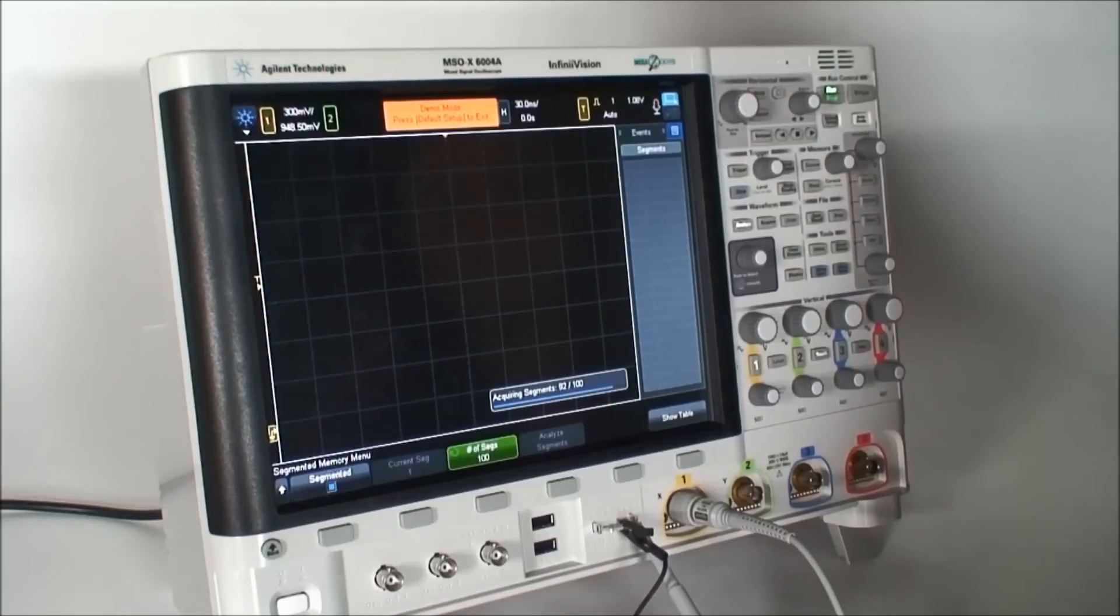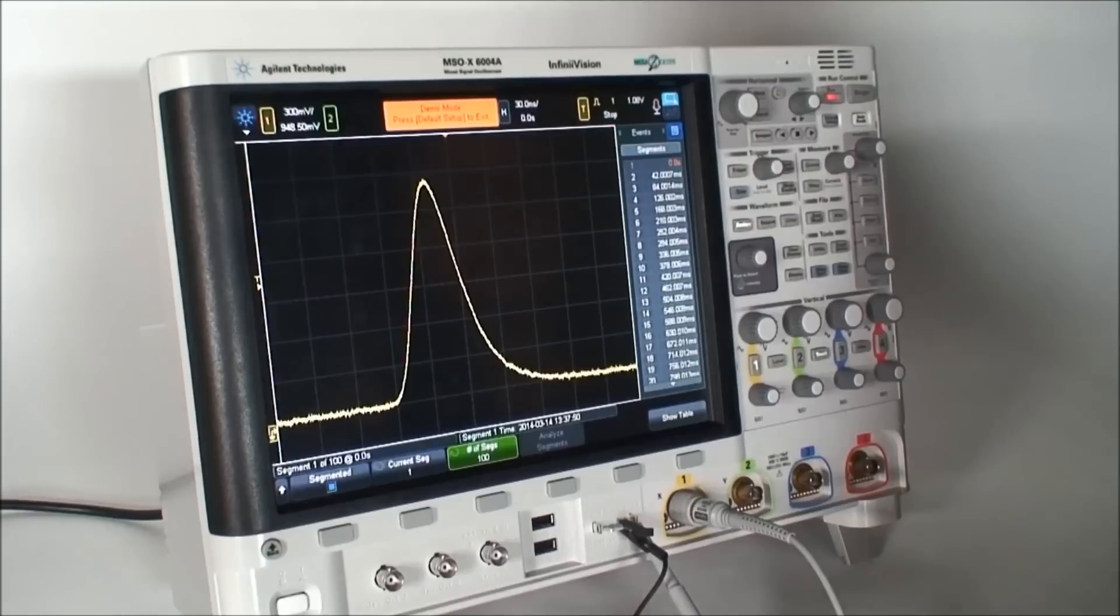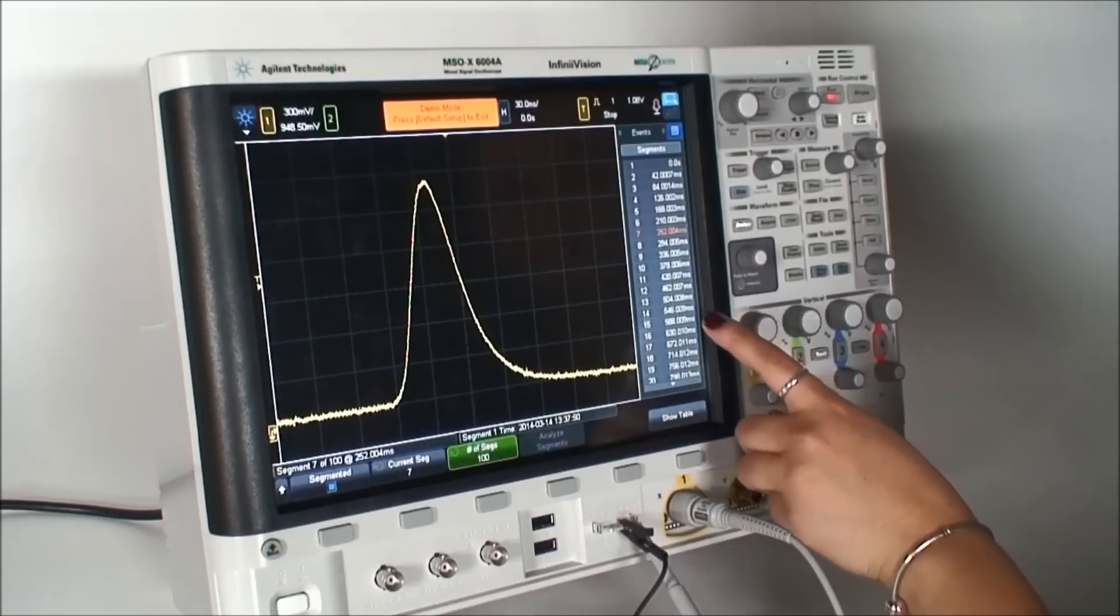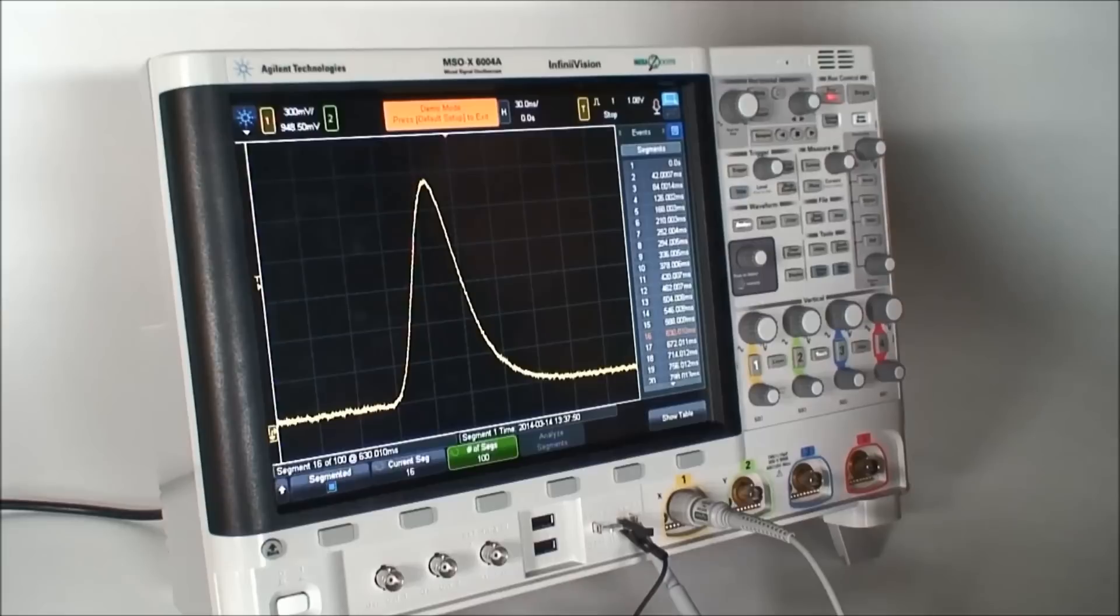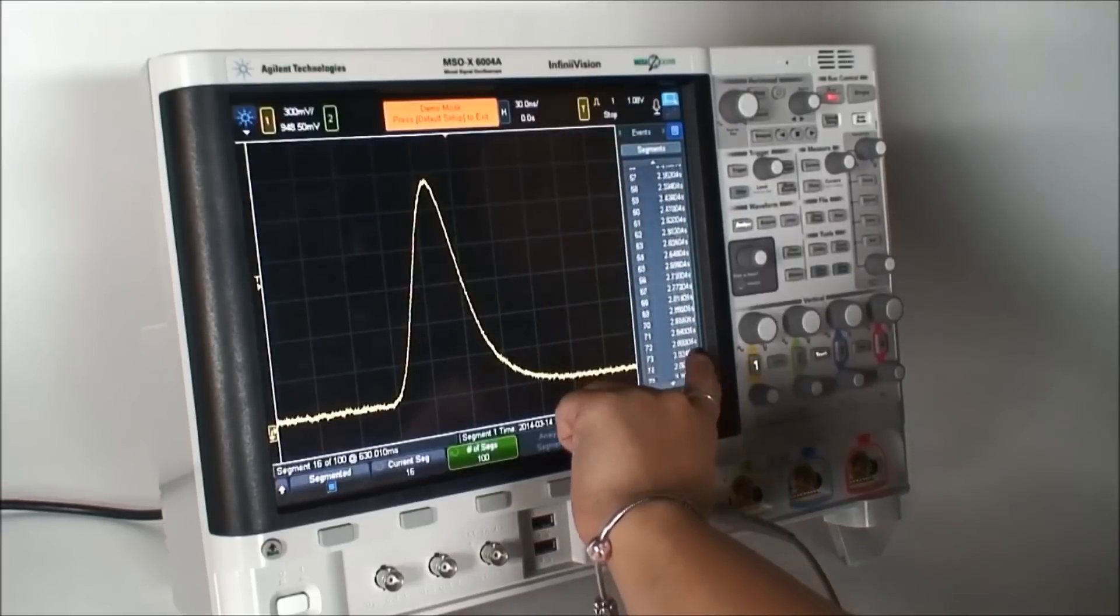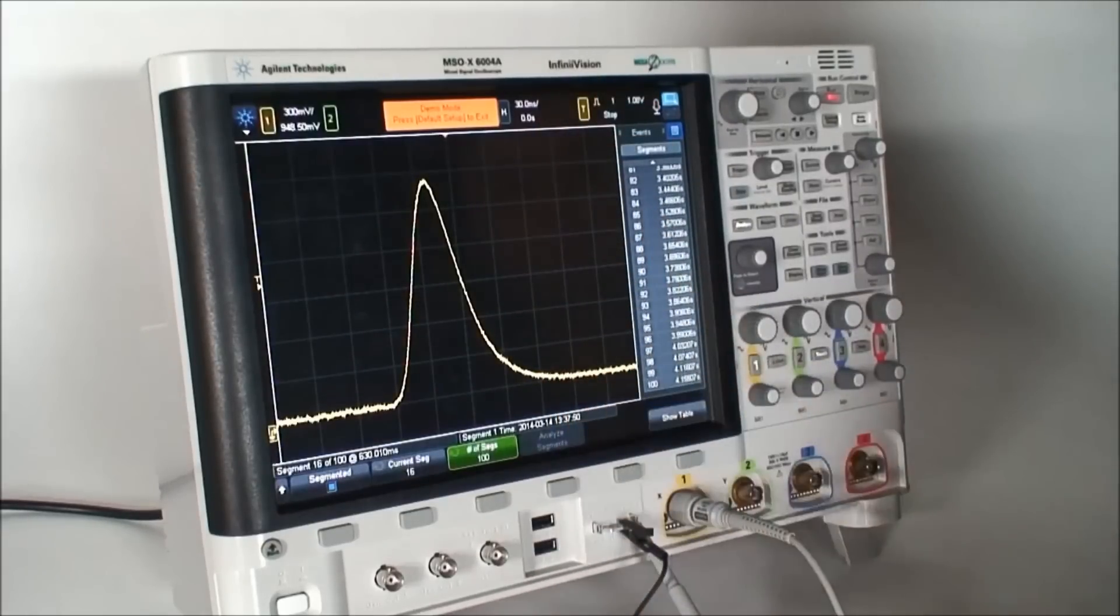The scope has now captured 100 events, and we can use the event table to navigate through each one. Notice that each glitch occurred about 42 ms apart, or at a frequency of about 24 Hz, which is the same result we got using the counter.